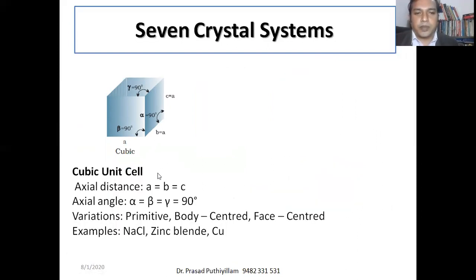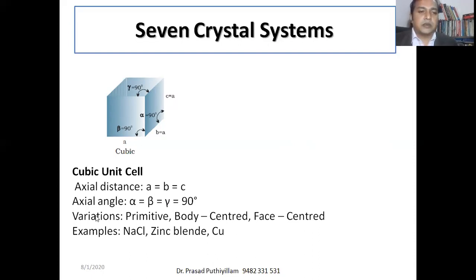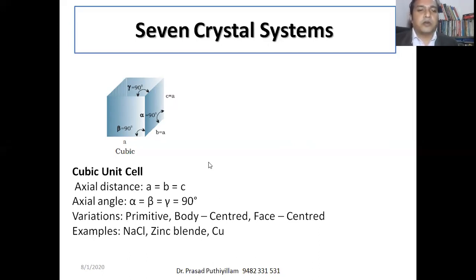In a cubic unit cell, the axial distances are all equal: a = b = c, and the axial angles are all 90°: α = β = γ = 90°. Cubic cells have three variations: primitive, body-centered, and face-centered. Examples of cubic crystal structures include sodium chloride, zinc blende, and copper.